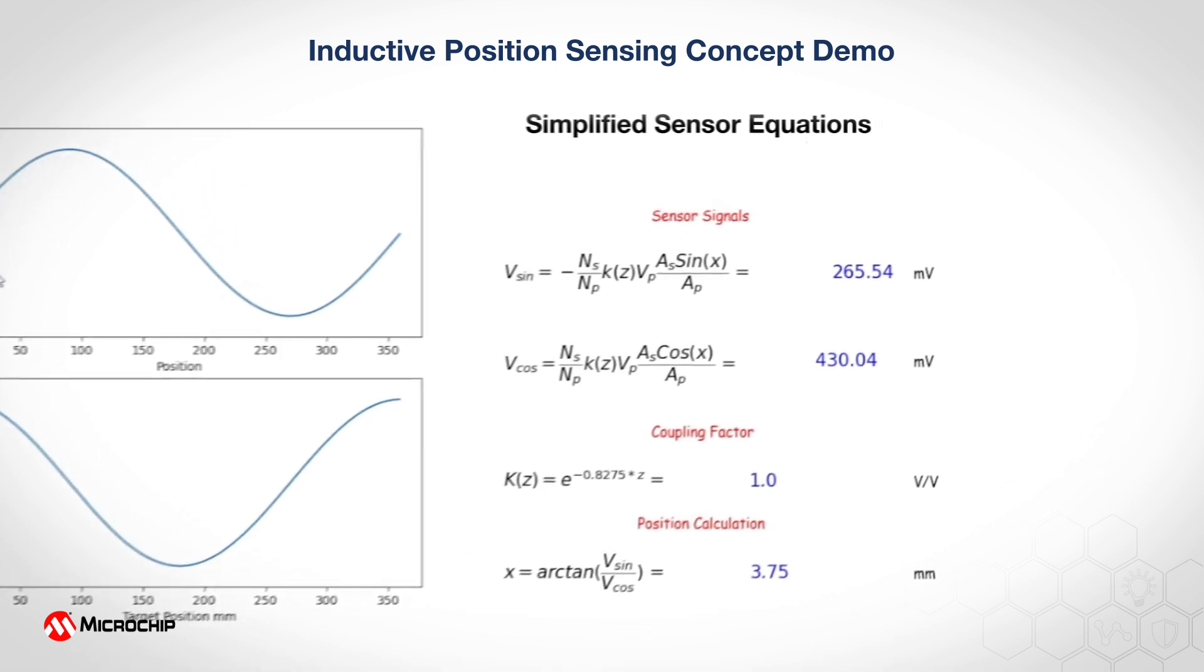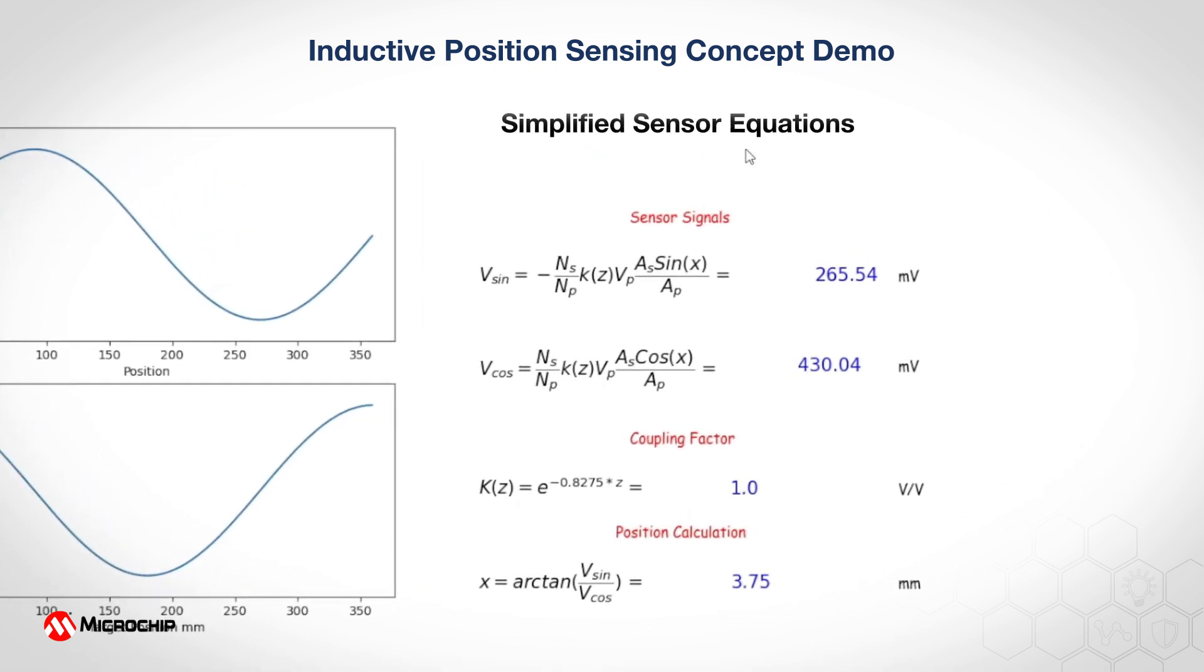On the right-hand side here, we have the simplified sensor equations. These are the mathematical tools that we use to model and calculate the position of the sensor. And of course these are very simplified mathematical equations so that we can just get a hold of what it means for each analog channel as well as the different parameters that we need to take into consideration and finally the position calculation.